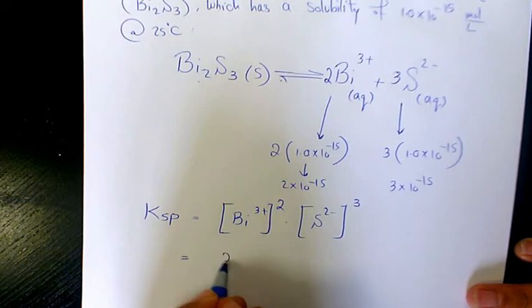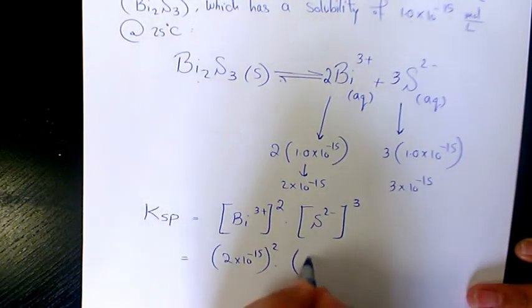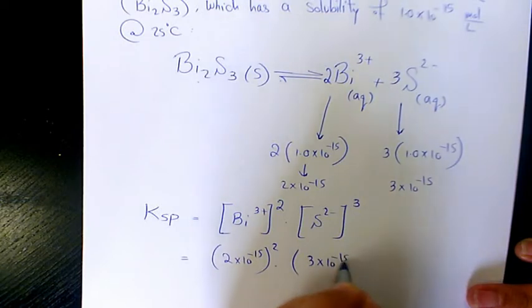That's going to be 2 times 10 to the power of negative 15 to the power of 2, times 3 times 10 to the power of negative 15 to the power of 3.